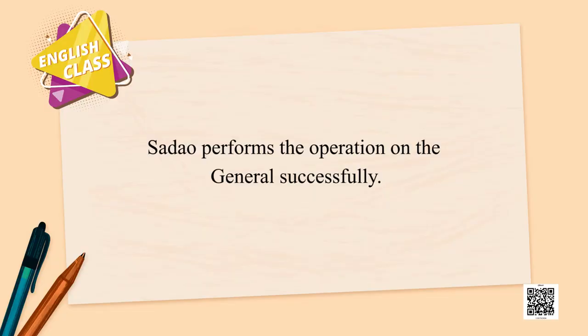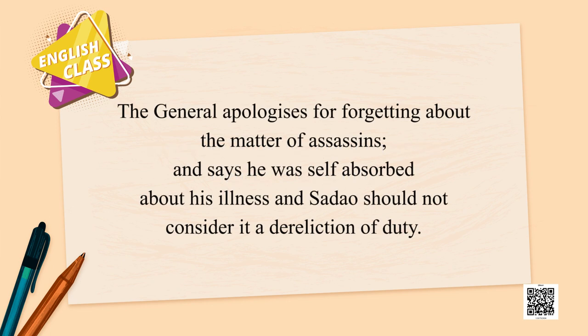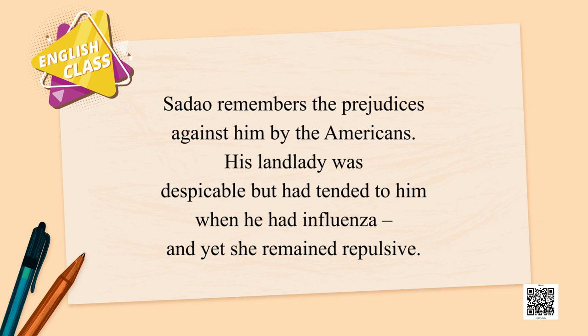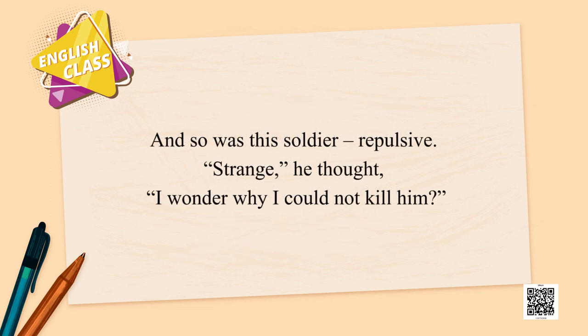The story then moves back to the military general. Sadao performs the operation on the general successfully. The general apologizes for forgetting about the matter of the assassins, saying he was self-absorbed about his illness — Sadao should not consider it a dereliction of duty. The general is also building alibis for not sending the assassins, showing a strange empathy for the young American soldier. The story ends with Sadao remembering the prejudices against him in America. His landlady was despicable but had tended to him when he had influenza, and yet remained repulsive to him — and so was this soldier repulsive to Sadao. The story ends: 'Strange, he thought — I wonder why I could not kill him.'